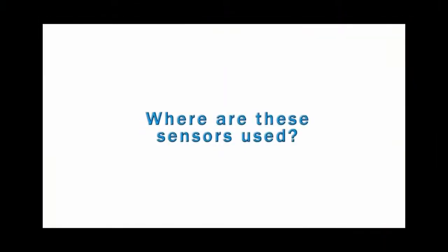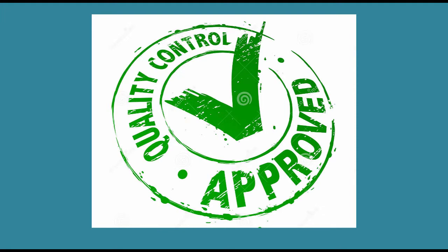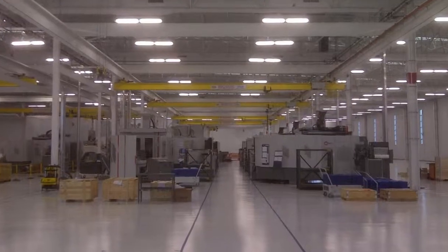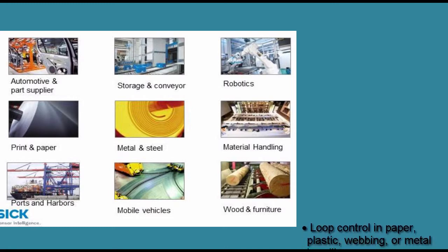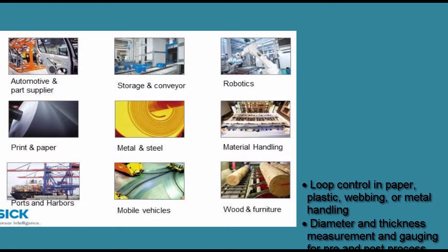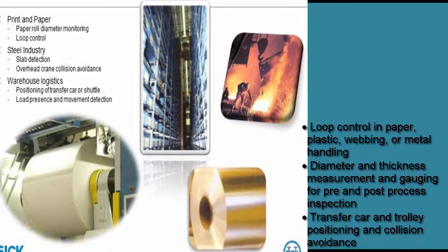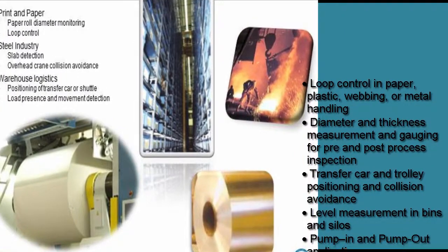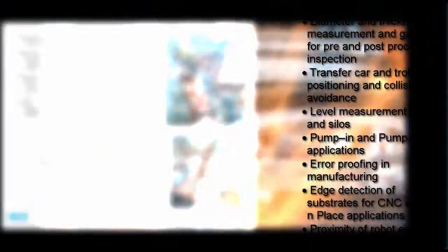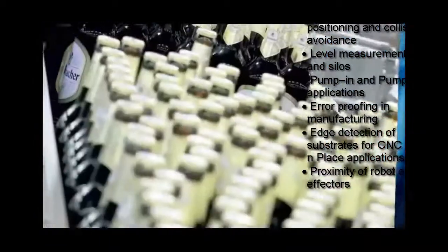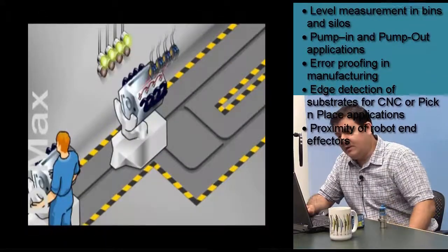These mid-range distance measurement sensors add value in many market segments and are used for quality control, process control, vehicle positioning, and collision avoidance. Applications include, but are not limited to: loop control in paper, plastic, webbing, or metal handling; diameter and thickness measurement for pre and post process inspection; transfer car and trolley car positioning and collision avoidance; level measurement in bins or silos; pump in and pump out applications; error proofing in manufacturing; edge detection of substrates for CNC or pick-and-place applications; and proximity of robot end effectors. Anything that can reflect light or sound back to the sensor can be automated.